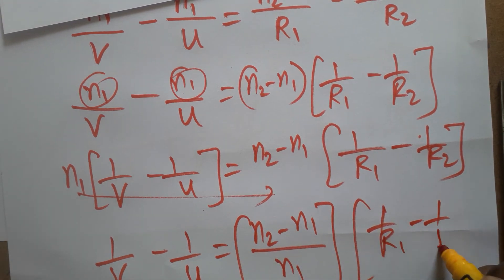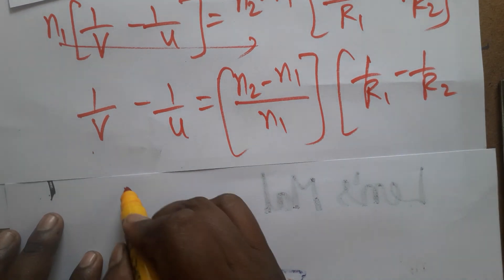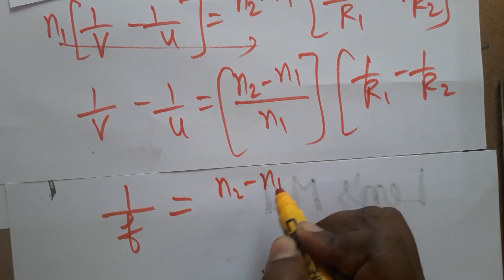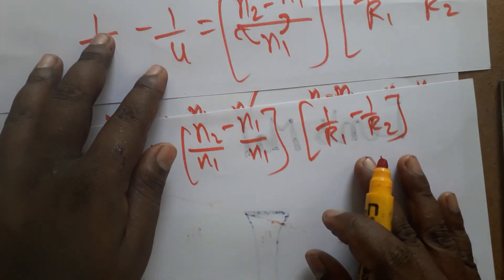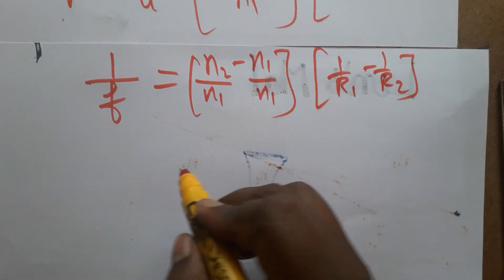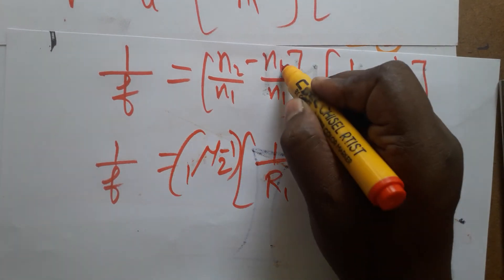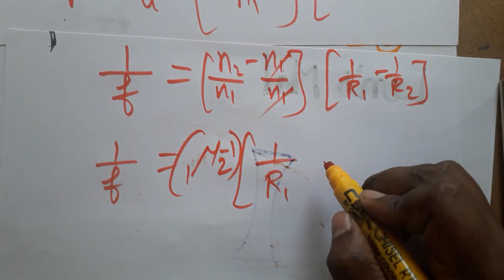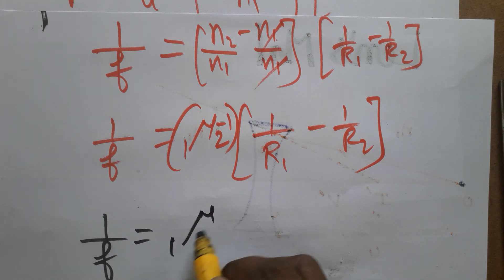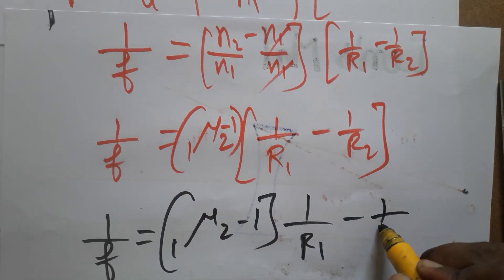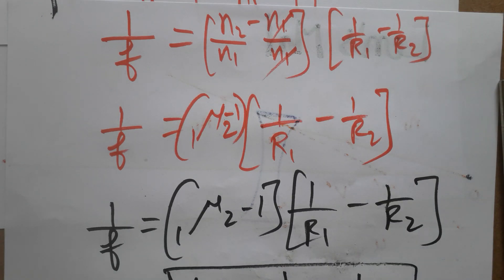We already know the lens formula, so 1/v minus 1/u equals 1/f. Therefore: 1/f equals (n2 minus n1) divided by n1, times (1/R1 minus 1/R2). Since n2/n1 is the refractive index of the second medium with respect to the first medium, which equals mu, this simplifies to: 1/f equals (mu minus 1) times (1/R1 minus 1/R2). This is the final lens maker's formula. Thank you for watching.